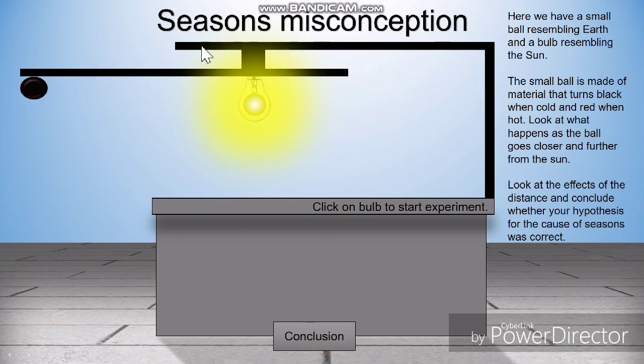This experiment proves that the orbit cannot go closer to the Sun and further away from the Sun. Otherwise, the entire Earth will have winter and the entire Earth will have summer.